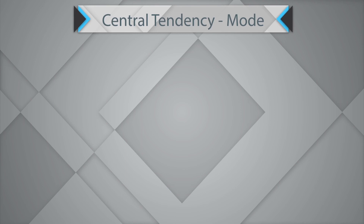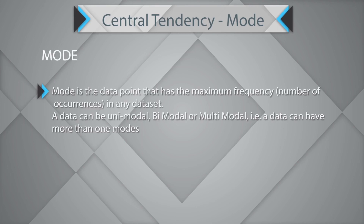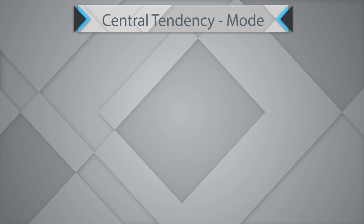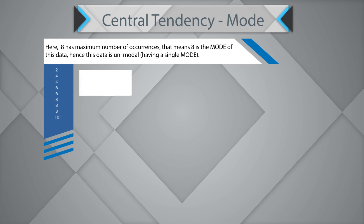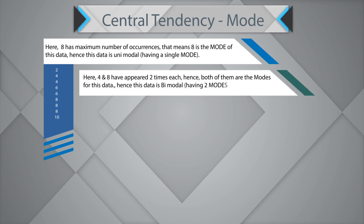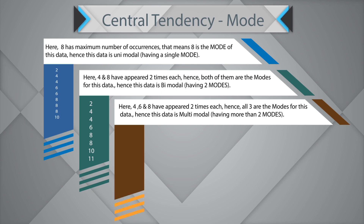The next measure of central tendency is mode. Mode is the data point that has the maximum frequency or number of occurrences in a data set. Data can be unimodal — having a single mode; bimodal — having two modes; or multimodal — having more than two modes. For example, if 8 has the maximum occurrences, the data is unimodal. If 4 and 8 each appear twice, the data is bimodal. If 4, 6, and 8 each appear twice, all three are modes and the data is multimodal.